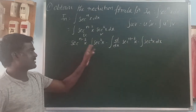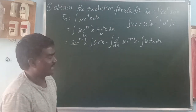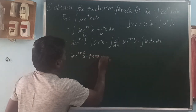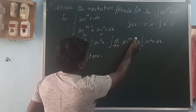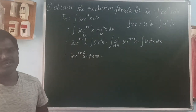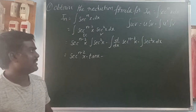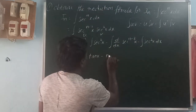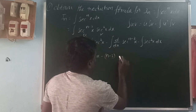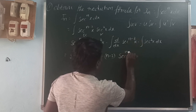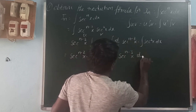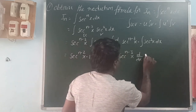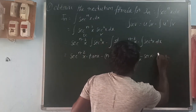So, that is here: u is secant power n minus 2x, and integration of secant squared x. We know that integration of secant squared x dx equals tan x. So, that is here: secant power n minus 2x into tan x, minus d/dx of secant power n minus 2x. The derivative of x power n is n times x power n minus 1. Here, in the place of x, we take secant x, and the power is n minus 2. So, that gives n minus 2 times secant power n minus 3x, times d/dx of secant x.